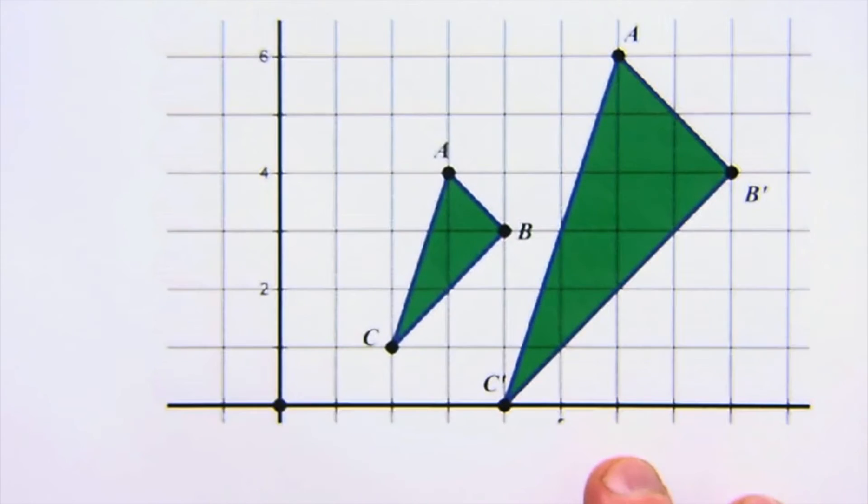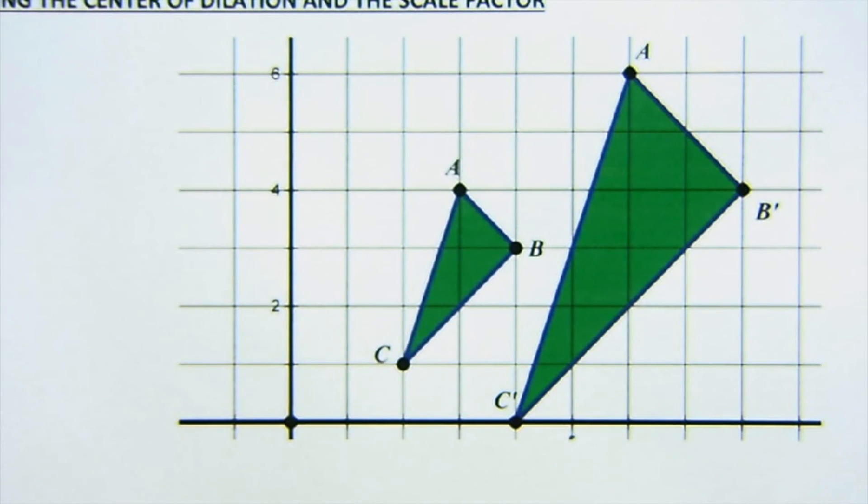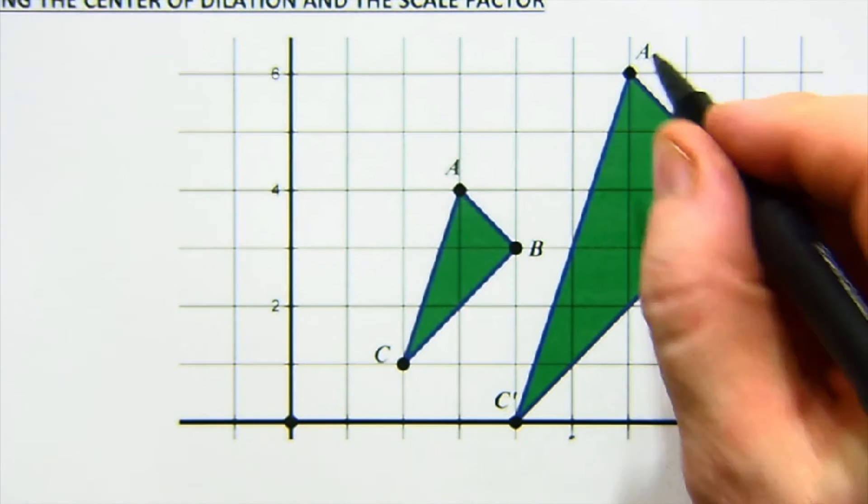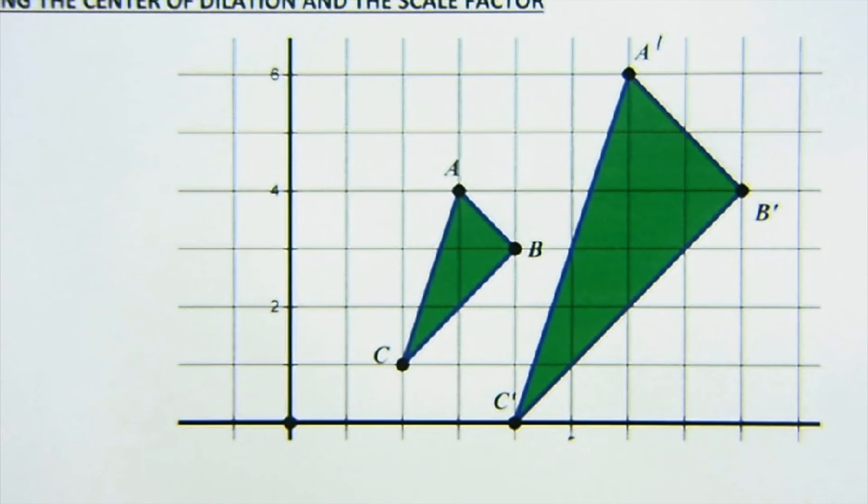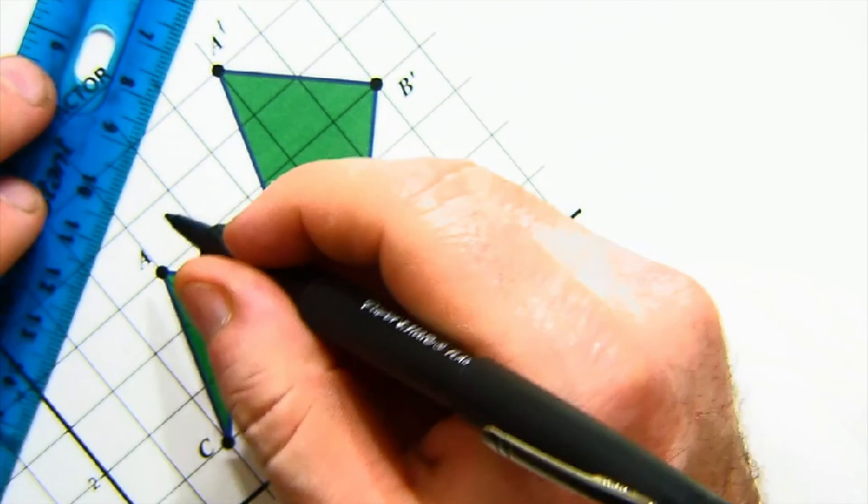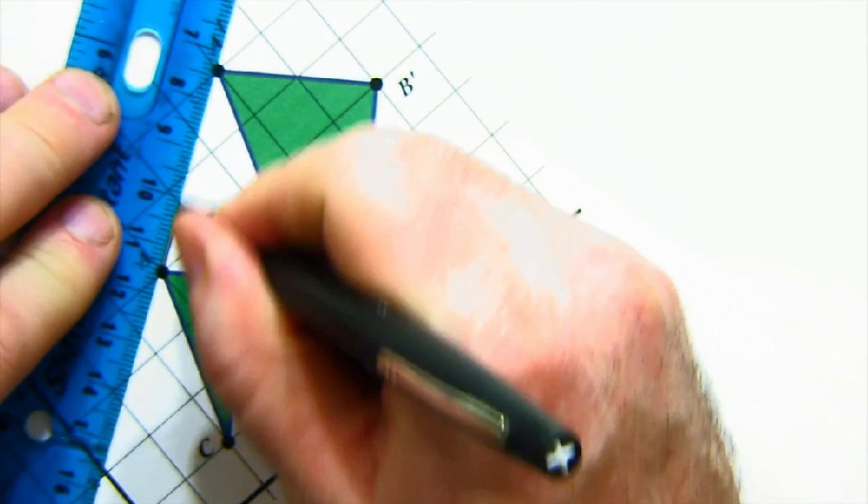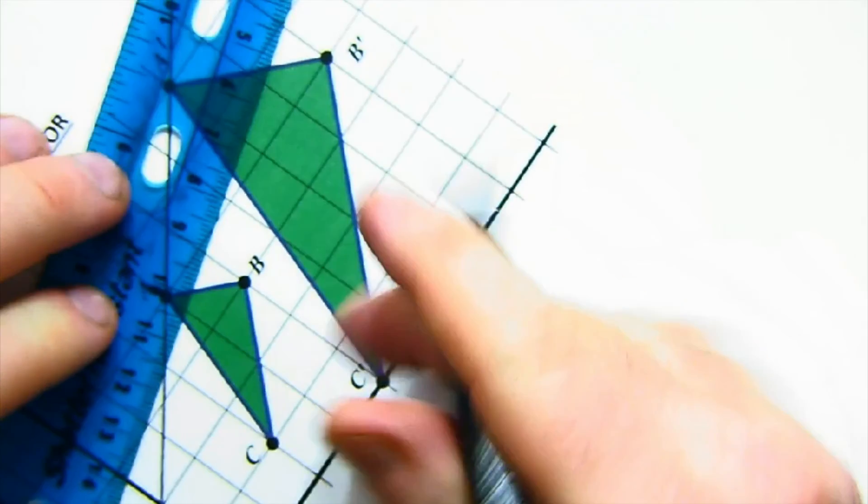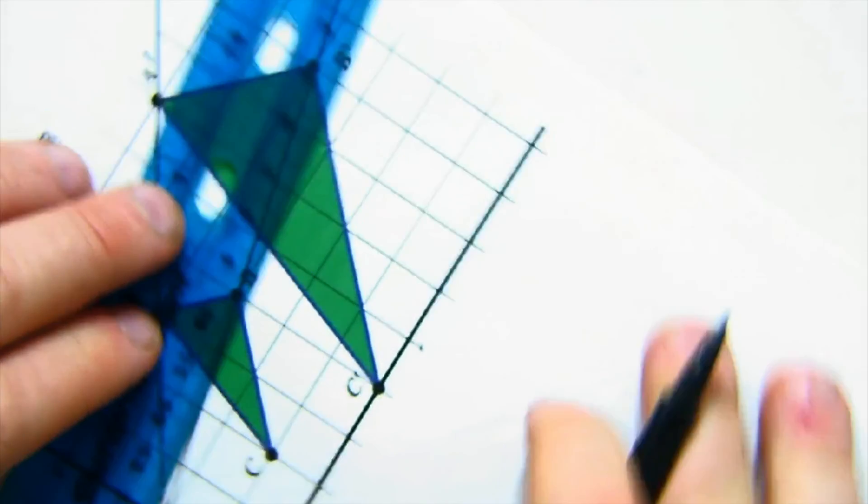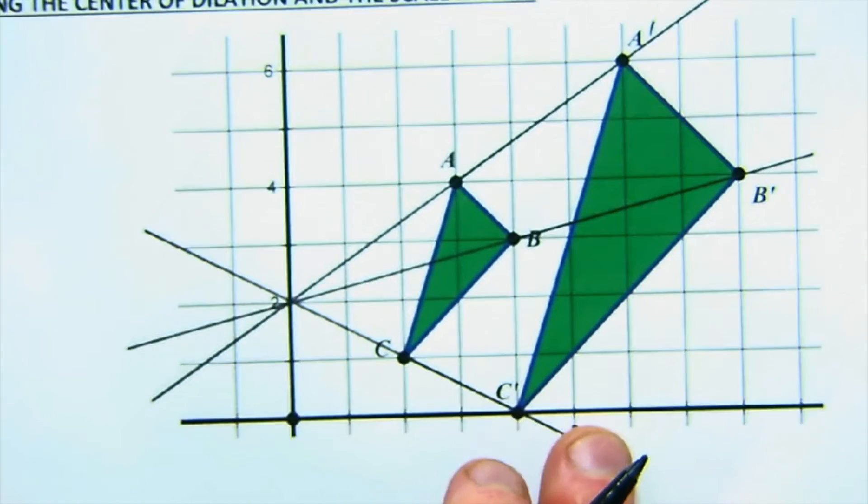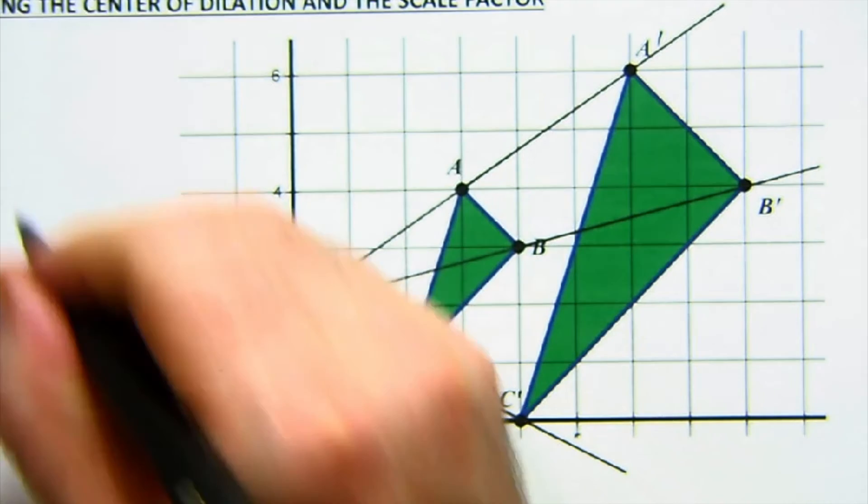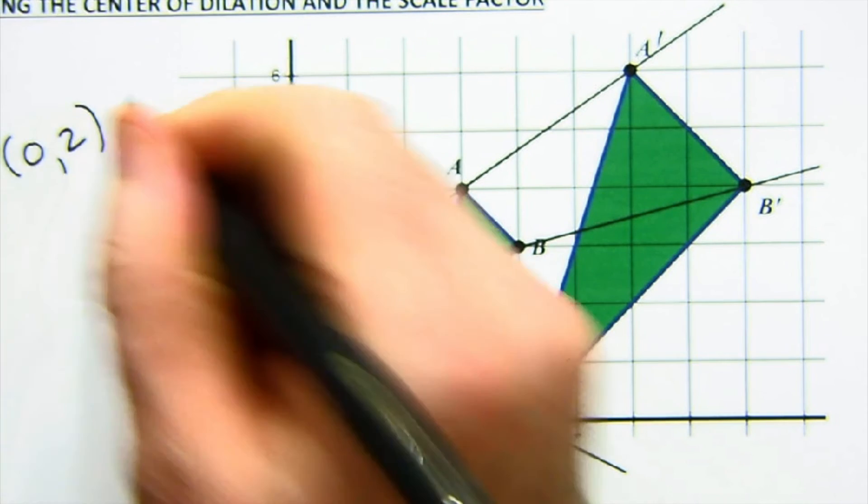The last thing I'll just say is sometimes we work you backwards. So we give you the scale and we say, hey, you know, what is the location of the center of dilation as well as the scale factor? And you just work it backwards. In other words, you just draw a vector or a ray through those. You draw it through B and B prime. You draw it through C and C prime. And they, of course, all have to take you to one place because they all got dilated. There it is. The center of dilation is at zero and two.